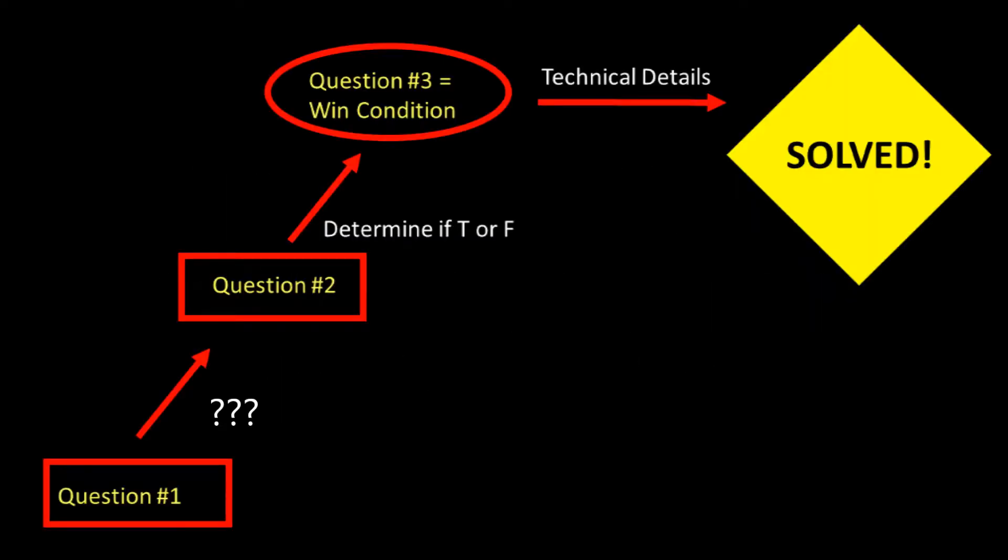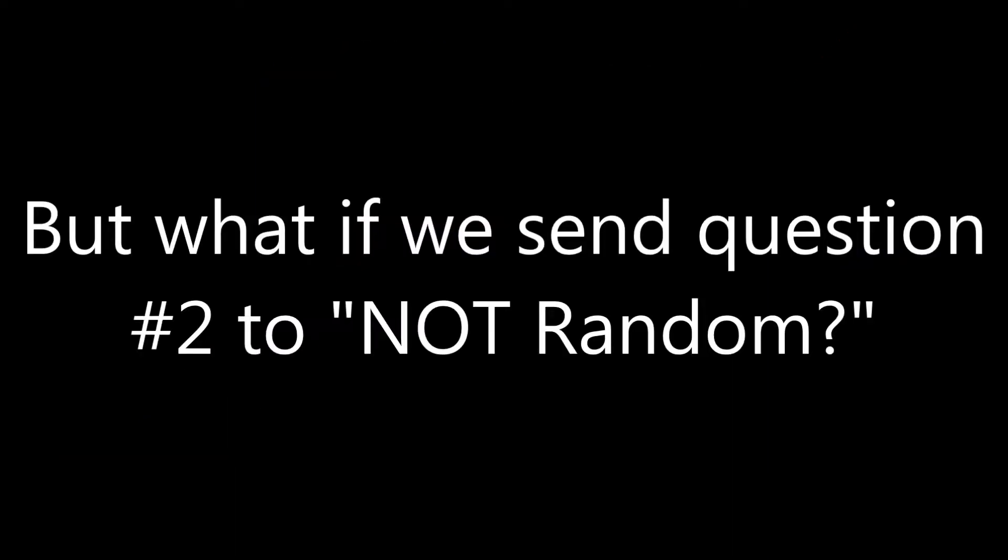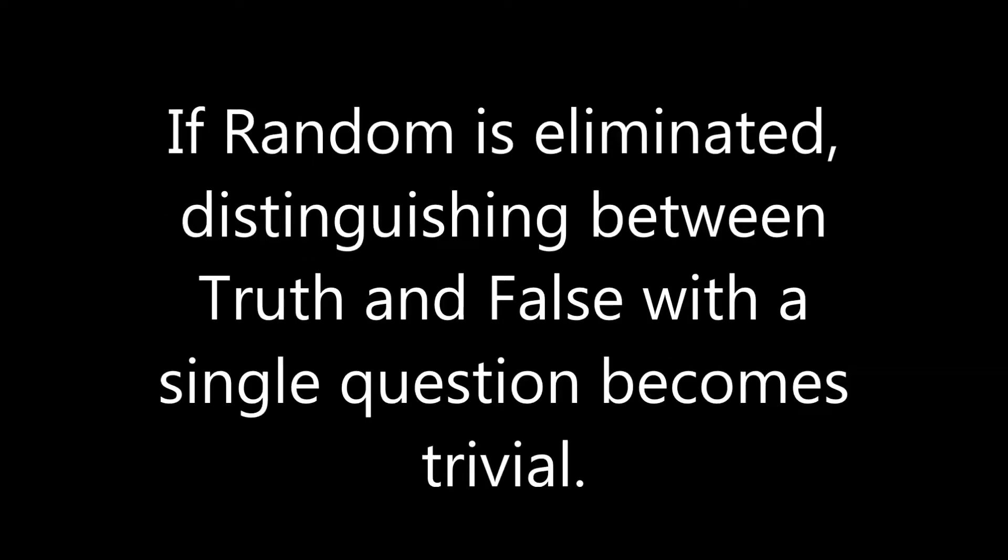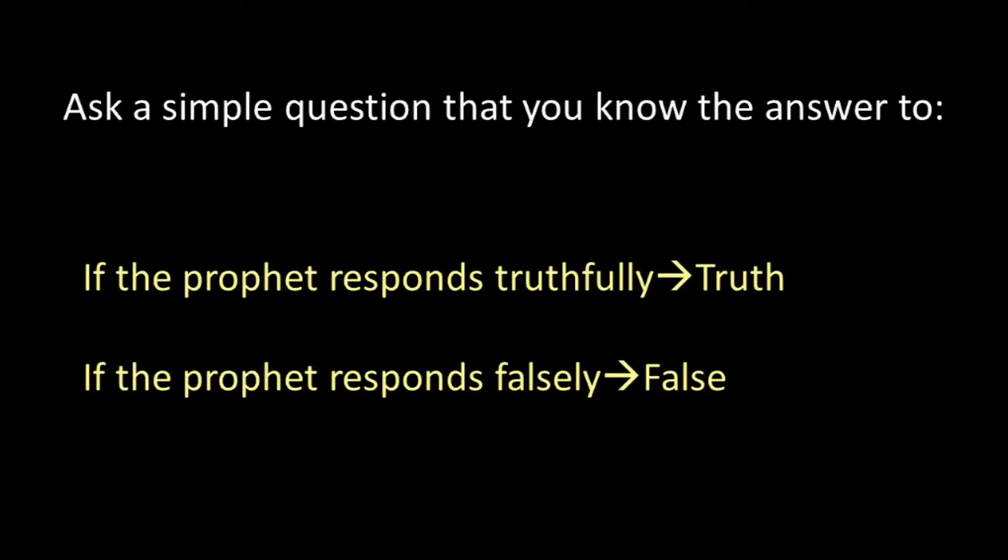How can we figure out which prophet is Truth or False? Random makes this very difficult because basically anything we send to him is a wasted question. So if we send question number two to a prophet that is not Random, we can easily determine his identity. For instance, if we know that we're not talking to Random, we can simply ask, 'Does a square have four sides?' or any answer that you know the answer to. If the answer is no, then we're talking to False. If the answer is yes, we're talking to Truth. So if Random is eliminated, we can easily get to the win condition.